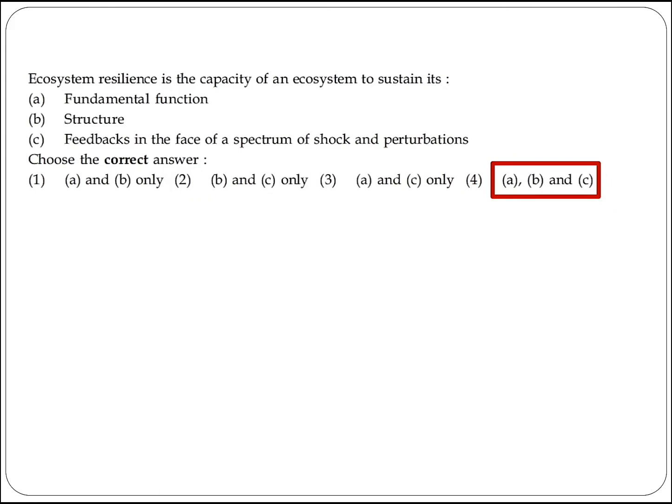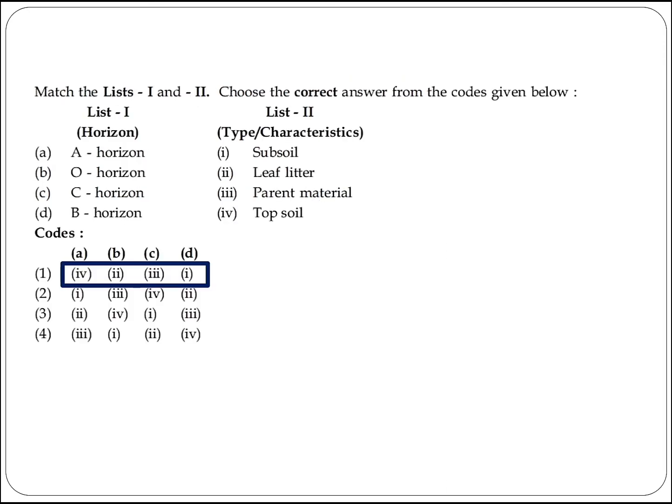The next question defines ecosystem resilience as the capacity of any ecosystem to sustain its fundamental functions, structure, and feedbacks in the face of a spectrum of shocks and perturbations. Option 4 (A, B, and C) is the right answer.